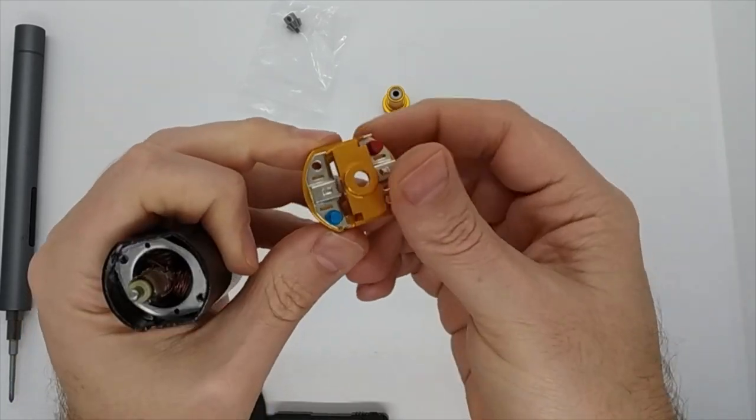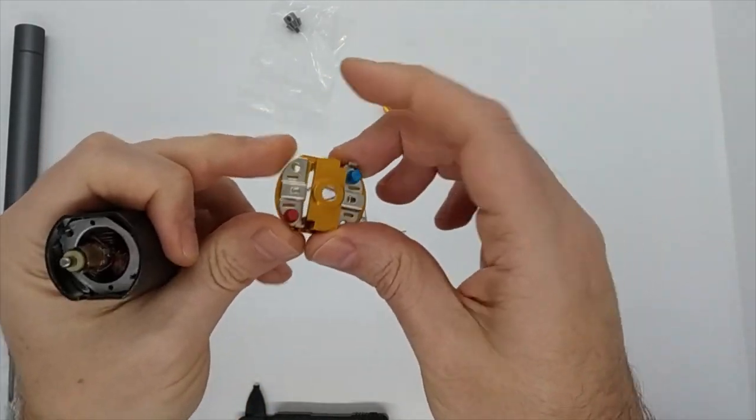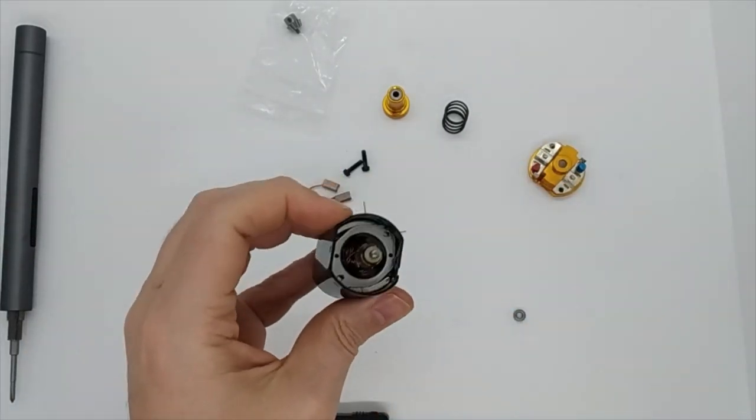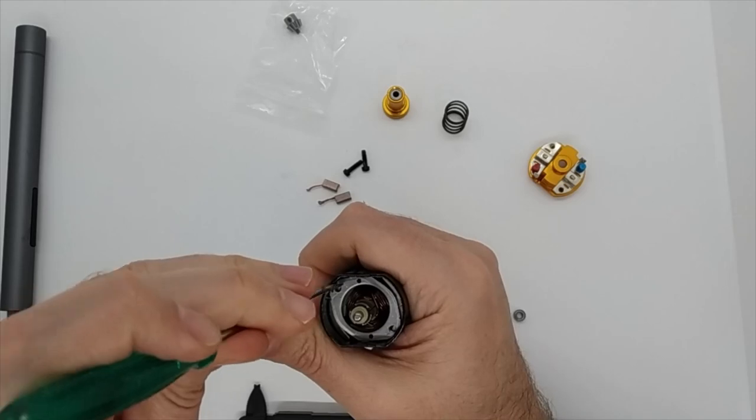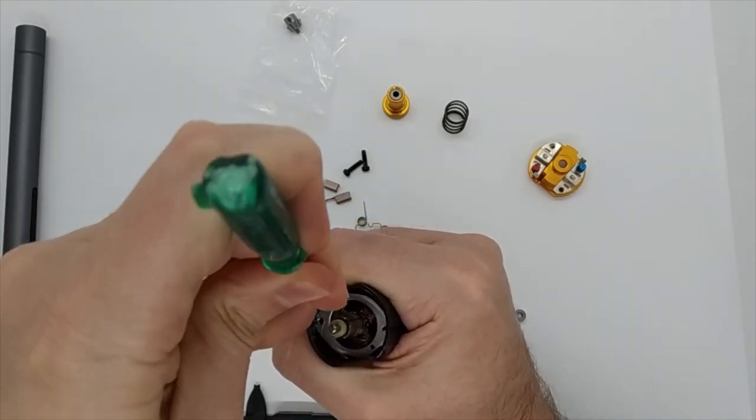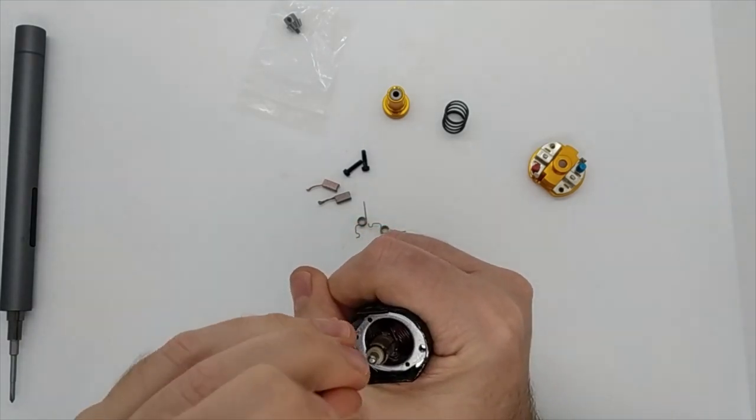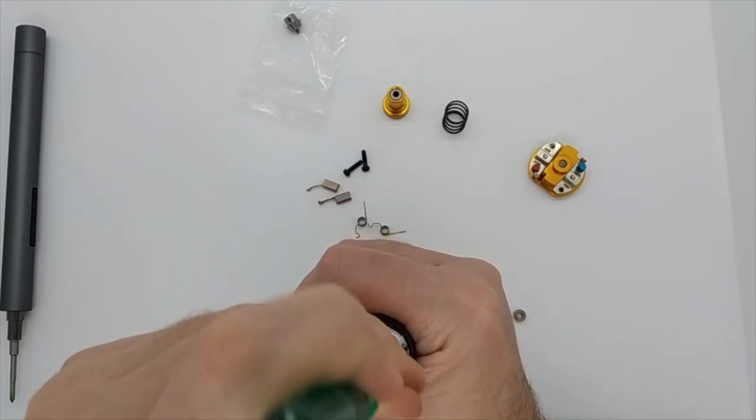And like with all of these screw end bells, you get a plate inside here. And it's always a little bit tricky to get out. Just move it from side to side and then it pops out.